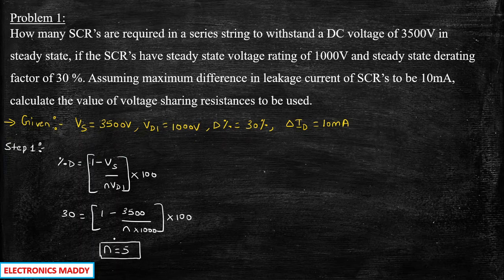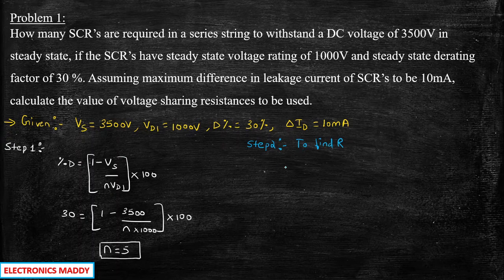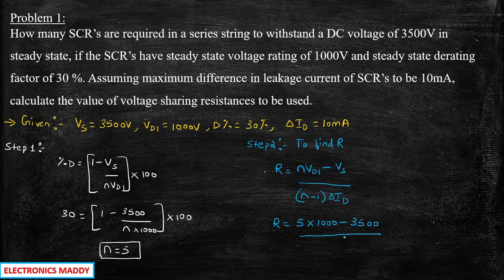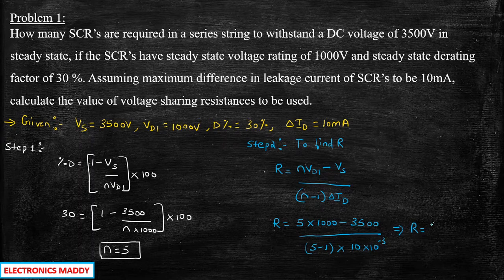So there are 5 SCRs connected in series in the string — we have solved the first portion of this problem. Now we need to find step 2, which is the resistor value R. The formula for R is: R equals N into Vd1 minus Vs, whole divided by N minus 1 into delta Id. Substituting N equals 5, Vd1 equals 1000, Vs equals 3500, and delta Id equals 10 milliamperes, we get R equal to 37.5 kilo ohm.